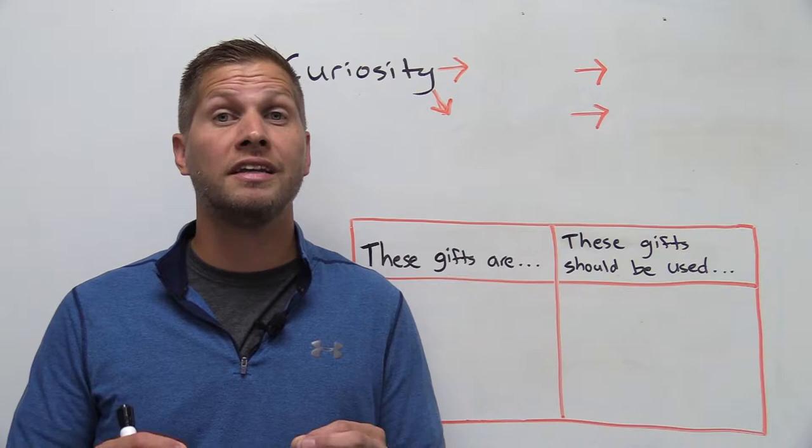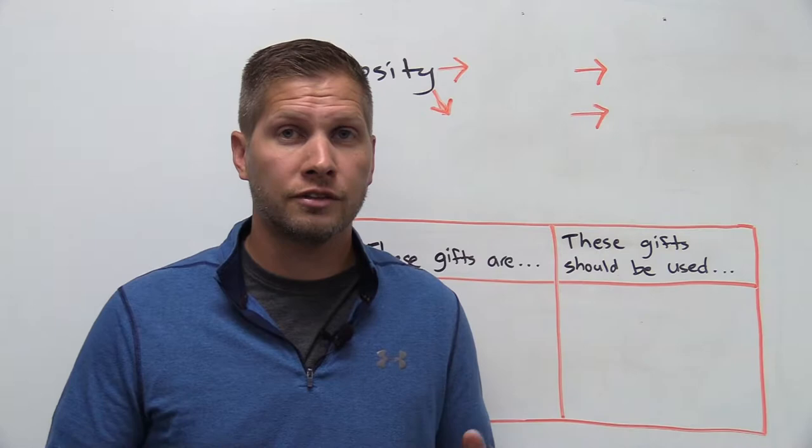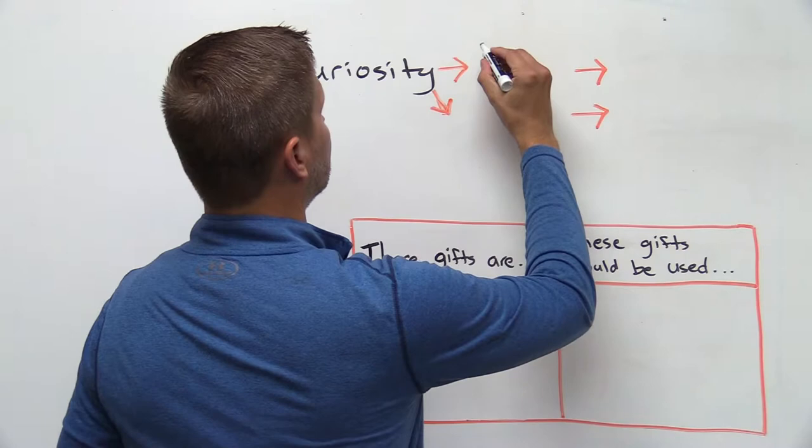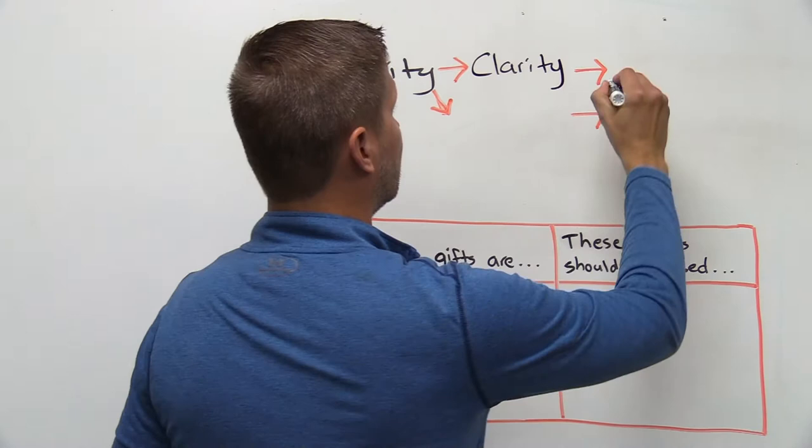So what we see in Acts chapter 2 at the first coming of speaking in tongues is that curiosity led to clarity as Peter addressed the crowd. And as a result, the church grew in size.